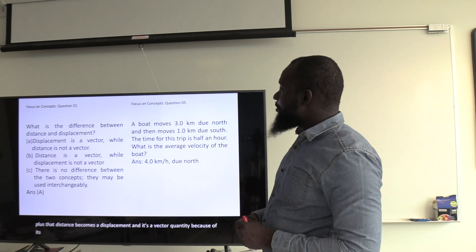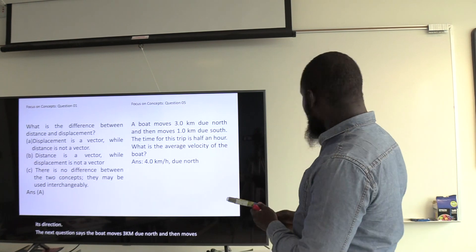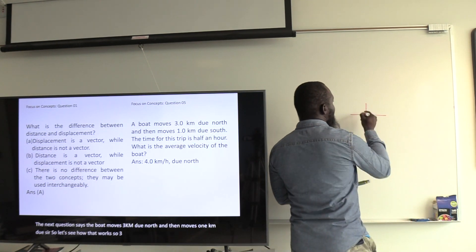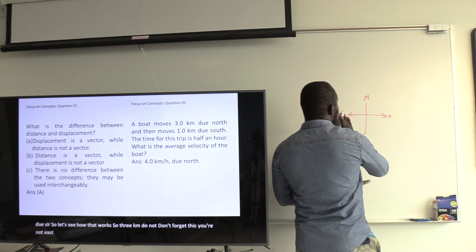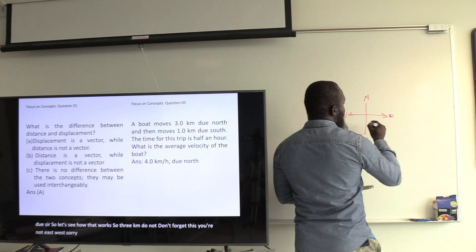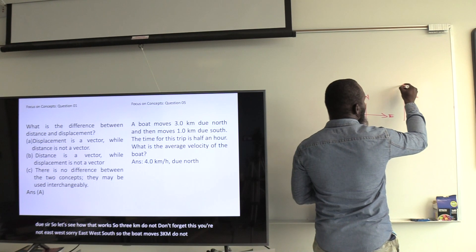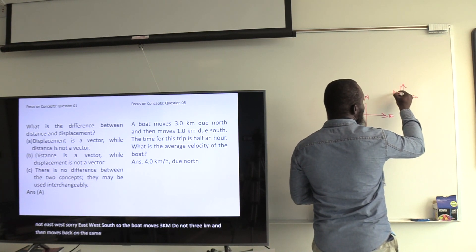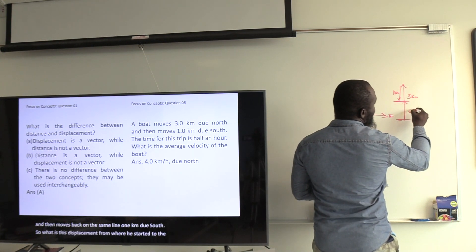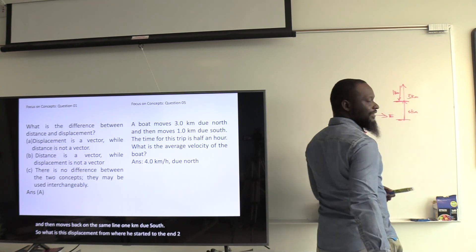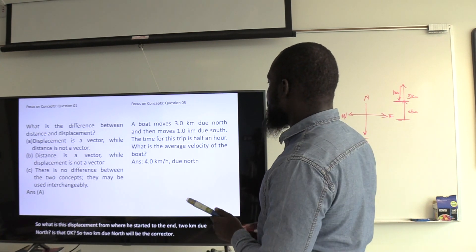The next question says a boat moves 3 kilometers due north, and then moves 1 kilometer due south. So the boat moves 3 kilometers north on a line, then moves back 1 kilometer due south. The displacement from where it started to the end is 2 kilometers due north.